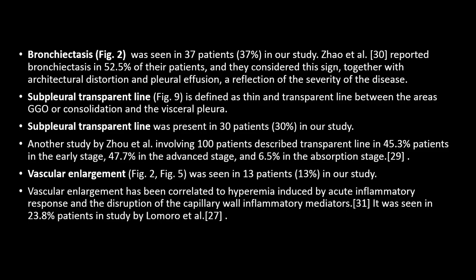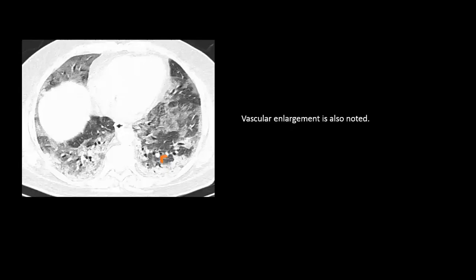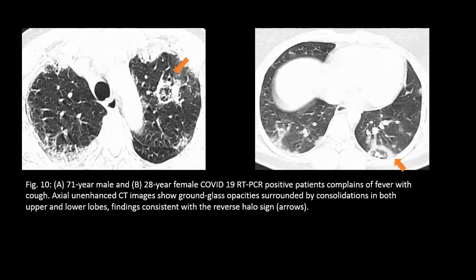Other findings such as bronchiectasis, subpleural transparent lines, and vascular enlargement can also be seen. In this enhanced axial CT, bronchiectatic changes are visible in the first image. In the second image, a thin subpleural transparent line is seen between the areas of GGO and the visceral pleura, consistent with subpleural transparent lines as shown by the arrow. Vascular enlargement is also visible, shown by the arrowhead. Additionally, an axial CT shows ground glass opacity surrounded by consolidation in both upper and lower lobes, consistent with the reverse halo sign.